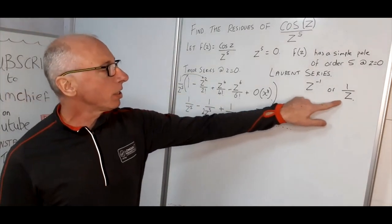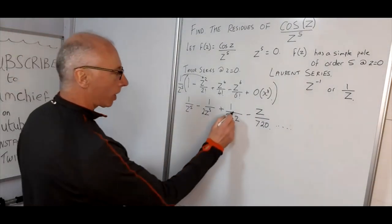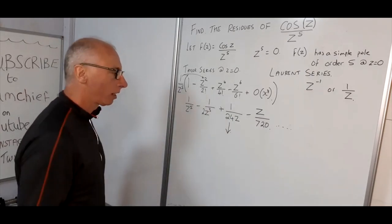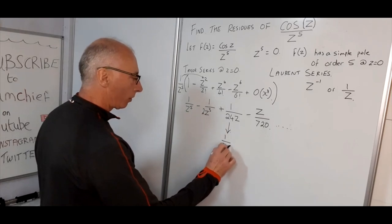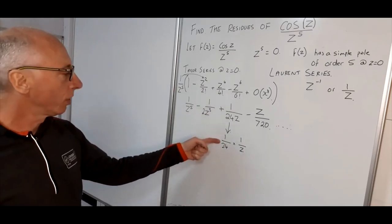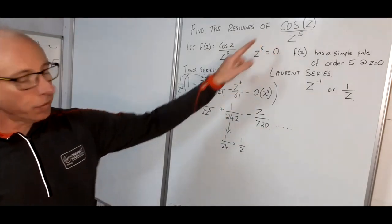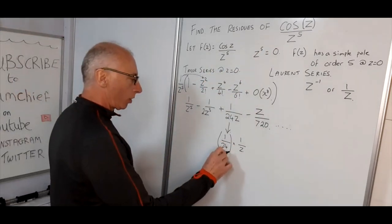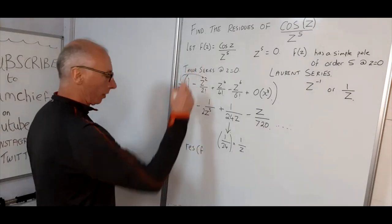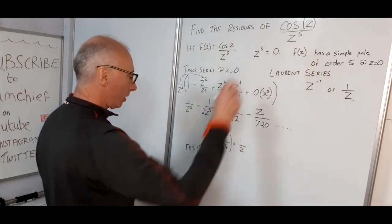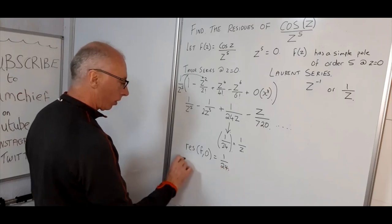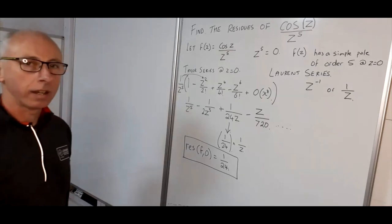The term we're interested in is the 1 over z term, which appears here as 1 over 24 times 1 over z. So the coefficient 1 over 24 is what we need for the residue. Therefore, the residue of f at z equals zero equals 1 over 24.